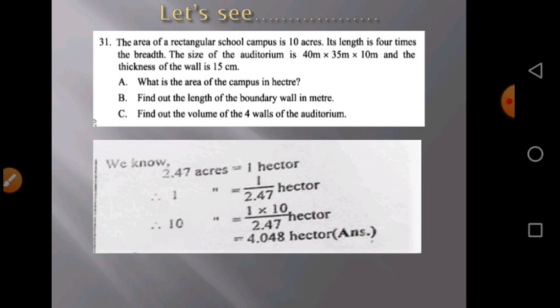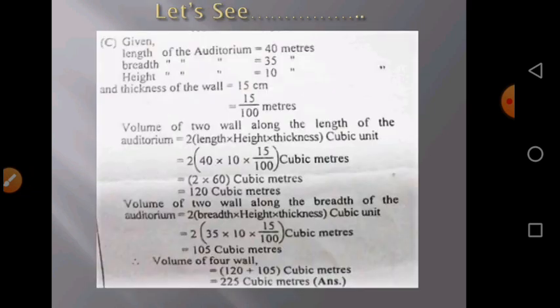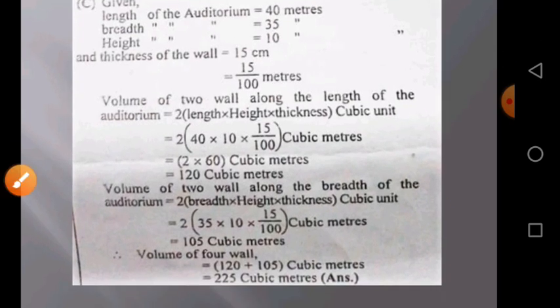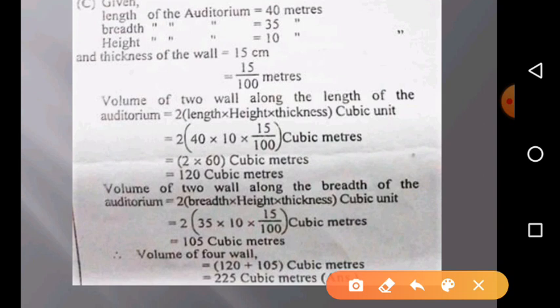Given: the length of the auditorium is 40m, breadth is 35m, and height is 10 meters. The thickness of the wall is 15 centimeters, which means 15/100 meters.